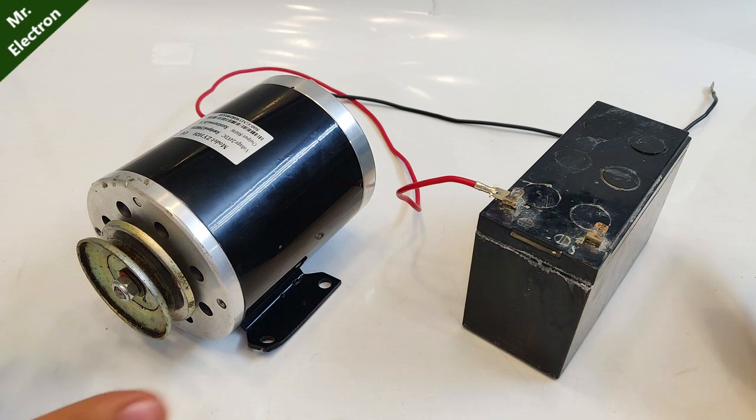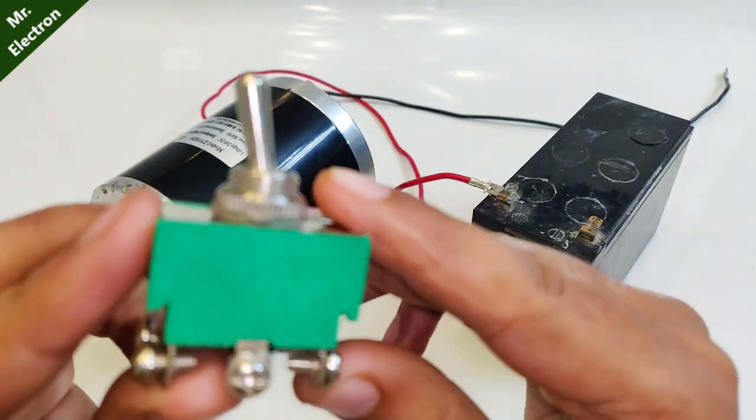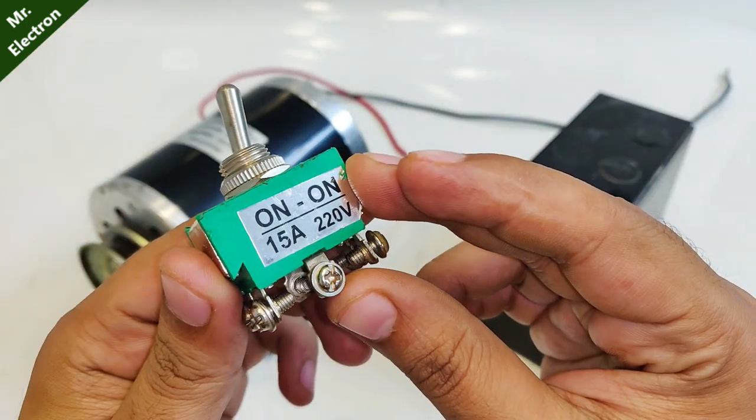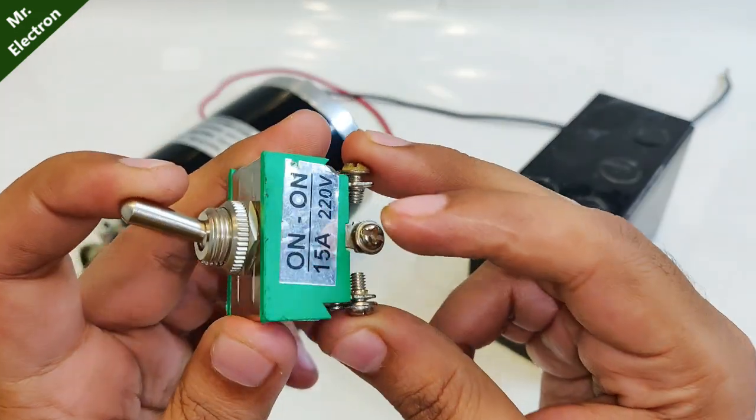So let's bring it to dead stop. For that, you will be needing a single push double throw switch. This what you see is rated at 220 volts and up to 15 amperes, and this is the max double throw switch I had.